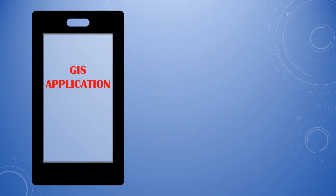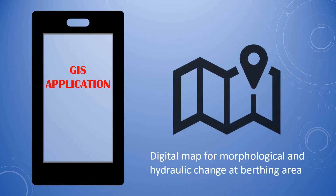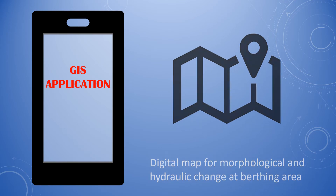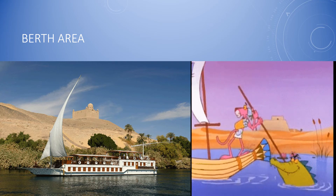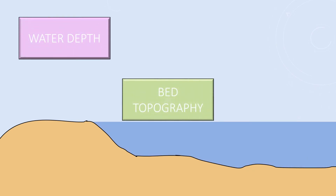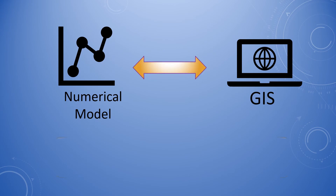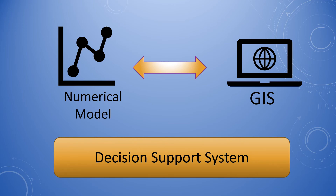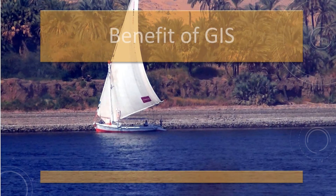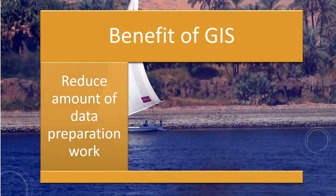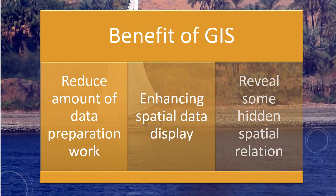The study aims to develop a GIS application for the berth area to serve two purposes: first, to develop a digital map for morphological and hydraulic changes at the berthing area; and second, to evaluate the condition of the Nile River for safe navigation. A berth area is where ships are moored onto bollards and cargo is loaded or discharged. Navigation in the Nile River is greatly affected by water depth, bed topography and water level. The study linked a numerical model — consisting of physical, morphological and hydraulic conditions — with GIS to develop a decision support system, reducing data preparation work, enhancing spatial data display and revealing hidden spatial relationships.